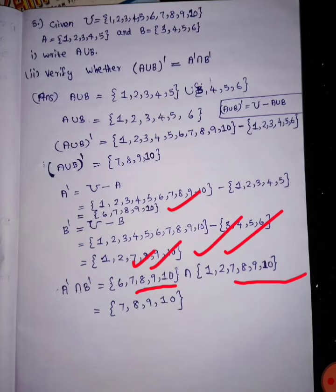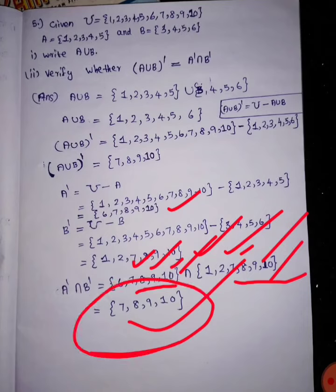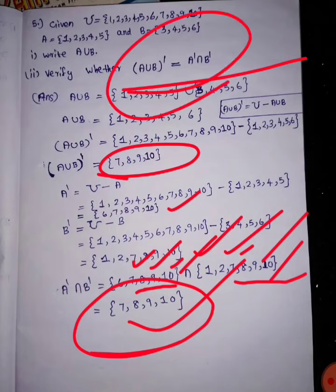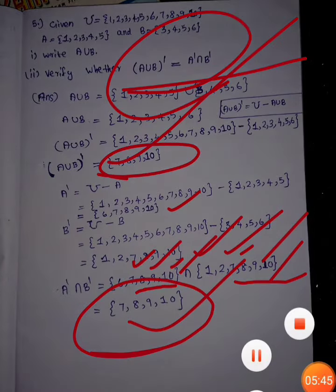The common terms are here: 7, 8, 9, 10 — those are the common terms. A dash intersection B dash equals 7, 8, 9, 10 — this is 4 elements. Left and right are equal. That's equal — set it correct. This is the end. I will show you more in the videos.